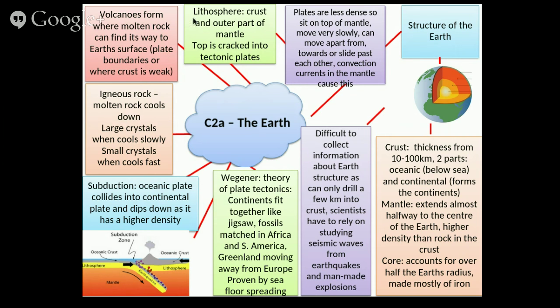All of that is basically sitting on the outside of the earth, apart from the bits to do with volcanoes where molten rock finds its way to the earth's surface. A key word here is lithosphere — this is the crust and the outer part of the mantle. On the earth you've got the crust, the mantle, the outer core, and the inner core. The crust is two parts — oceanic and continental. The mantle extends almost halfway to the centre. The core accounts for over half the earth's radius and is made mostly of iron, which is why we end up with magnetic fields.